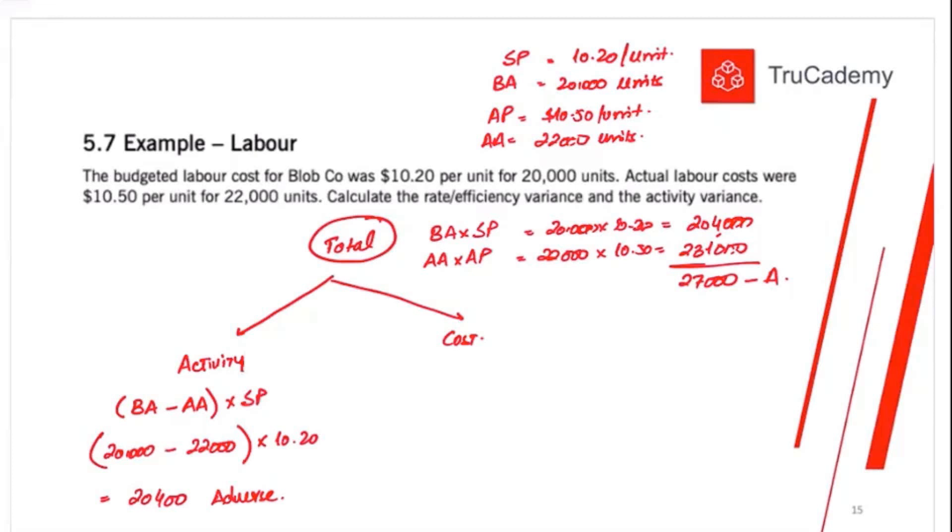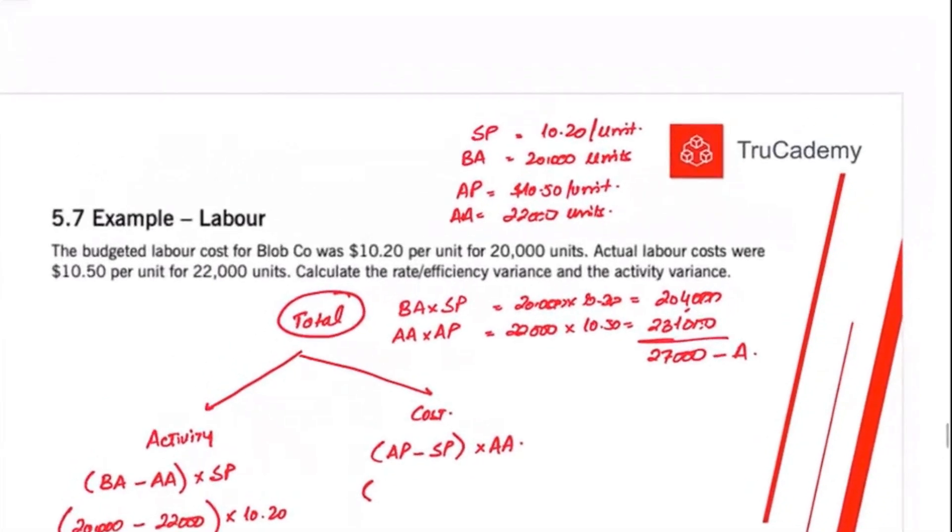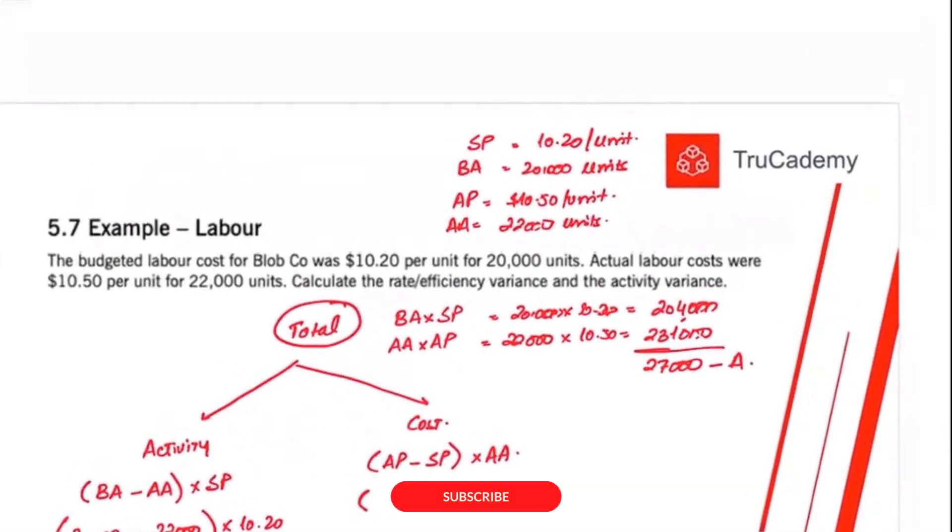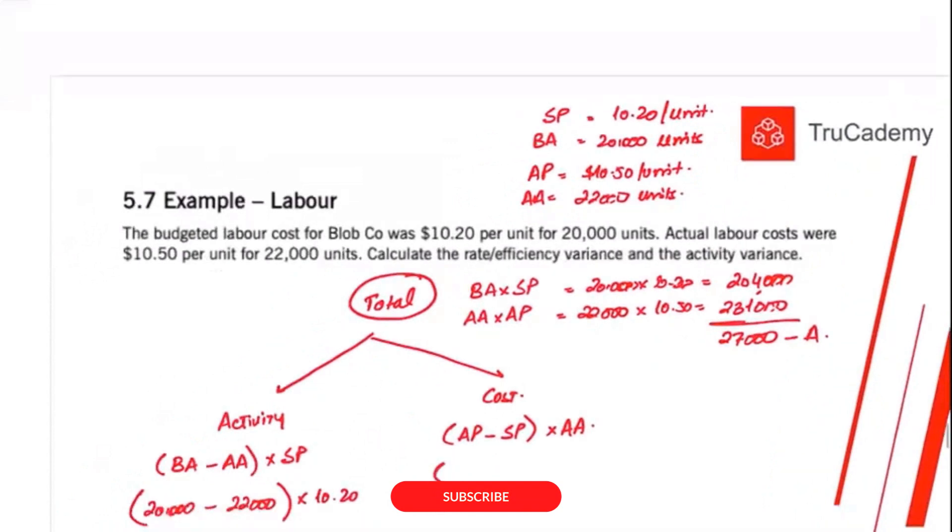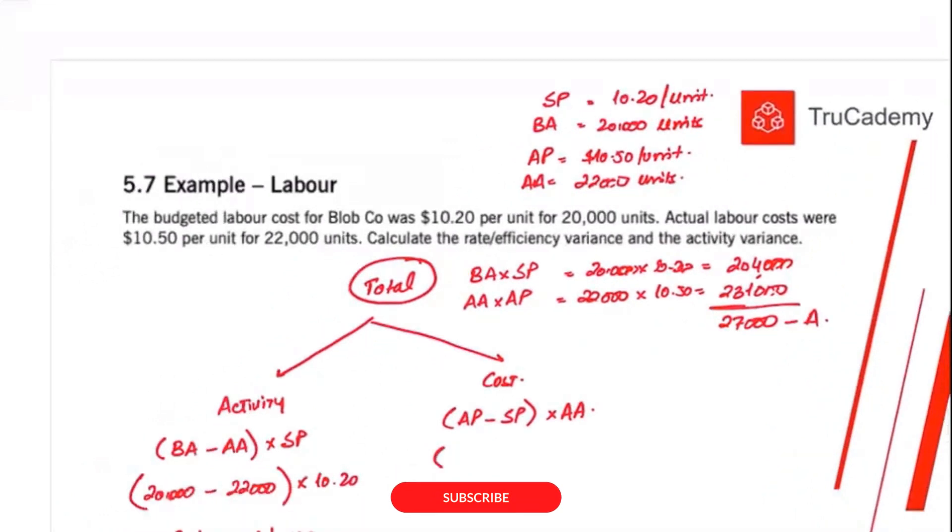Let's talk about the cost now. Compare the actual price with the standard price or budgeted price. And I'm calling it price, but it's a cost. So actual price minus standard price multiply with the actual activity. Actual price, the actual cost we were supposed to pay to the labor was 10.50. And the standard price is 10.20. This is standard.